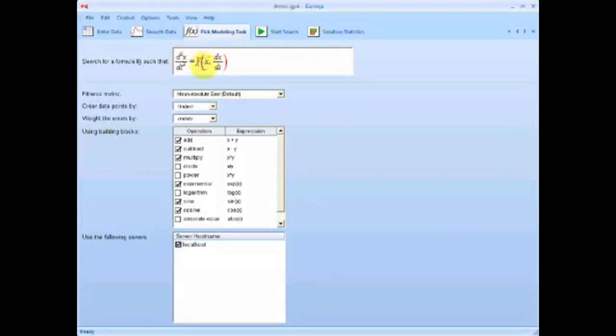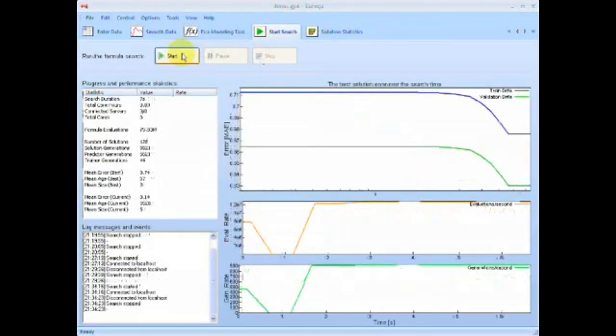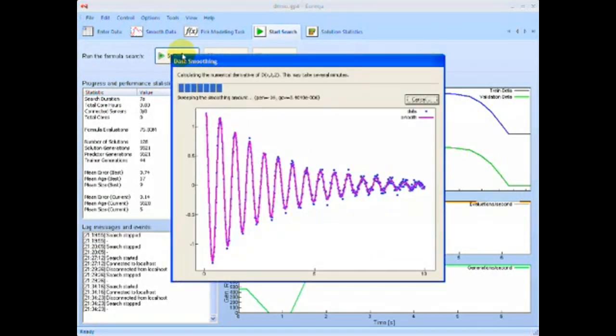Clicking off, you can see we're modeling the acceleration of x as a function of x and its velocity. So let's go ahead and click start, let's start looking for the second derivative model.